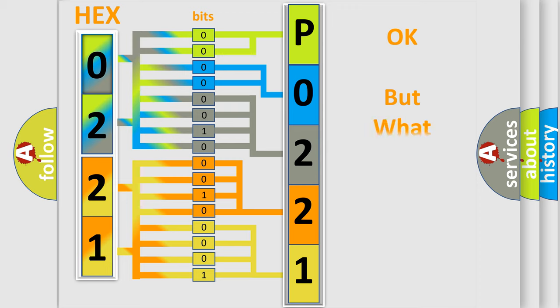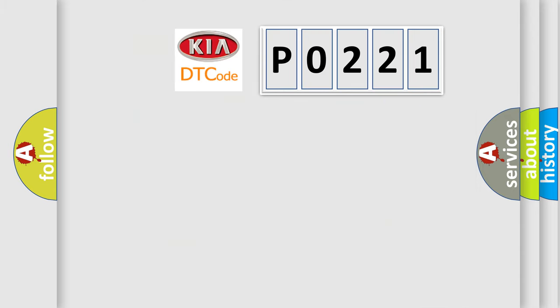The number itself does not make sense to us if we cannot assign information about what it actually expresses. So, what does the Diagnostic Trouble Code P0221 interpret specifically for KIA car manufacturers?